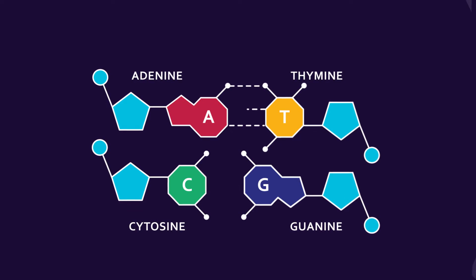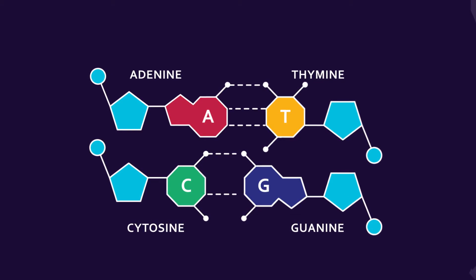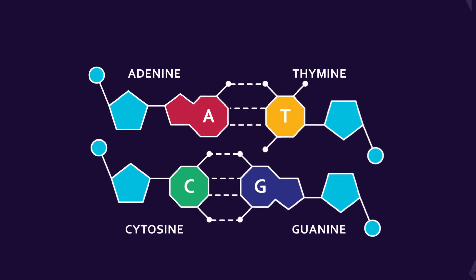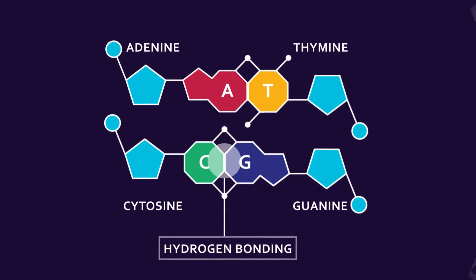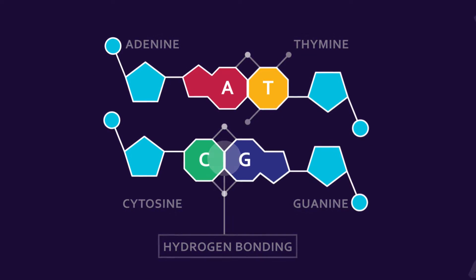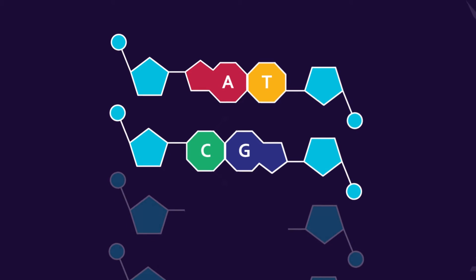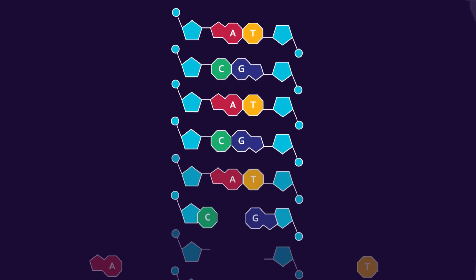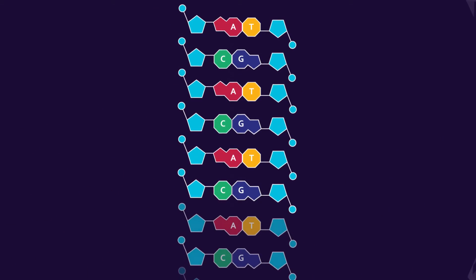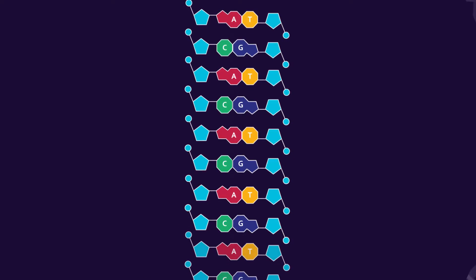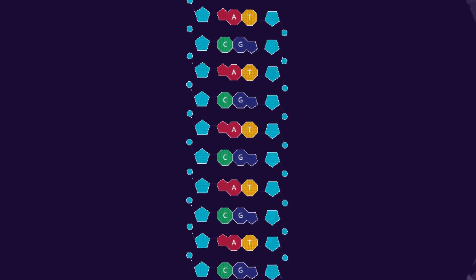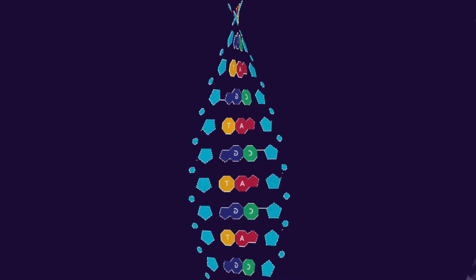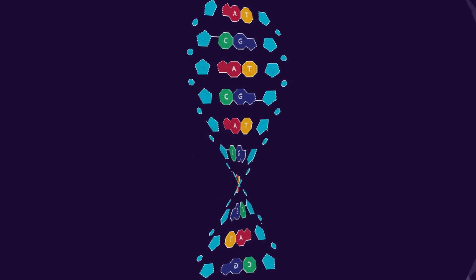Adenine will always bind with thymine, and cytosine with guanine. This type of bonding is hydrogen bonding. Phosphate and sugar are linked together to make the backbone, and complementary bases are attached on it. Due to the bond angle of the sugar phosphate molecules, the linkages will eventually form a double helix structure.